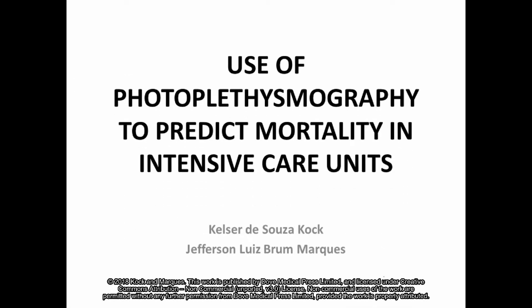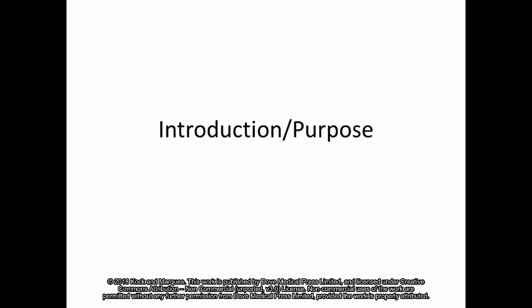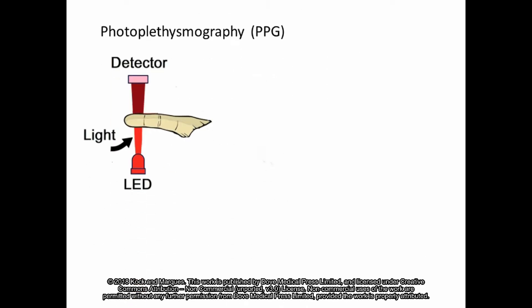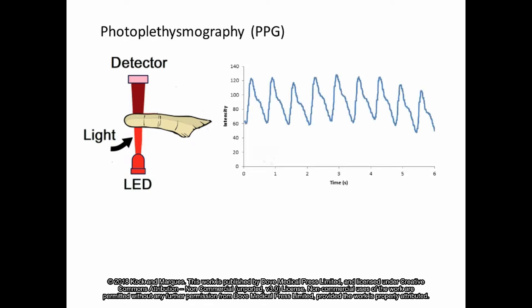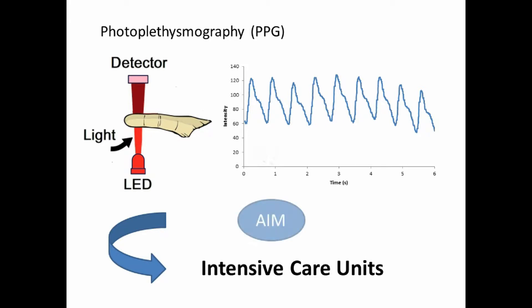Use of photoplethysmography to predict mortality in intensive care units. Photoplethysmography is a non-invasive technique that monitors the pulse wave, capturing the variation in peripheral blood volume. This device can provide information on hemodynamic parameters at bedside and assist in prognosis in an intensive care unit. The aim of this study was to evaluate and compare the capacity to predict hemodynamic variables obtained with photoplethysmography and APACHE-2 in patients hospitalized in the intensive care unit.